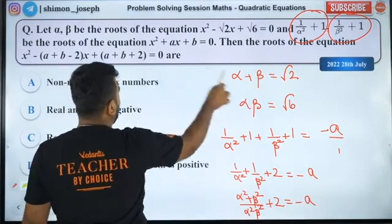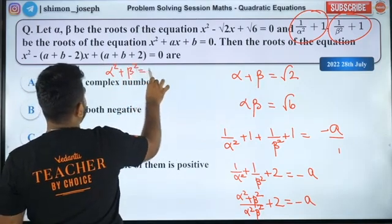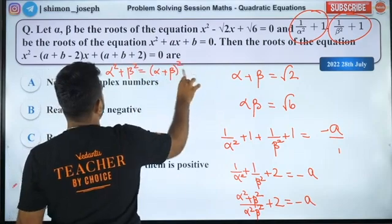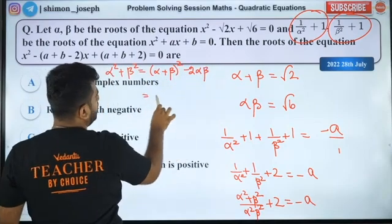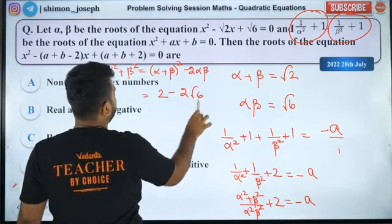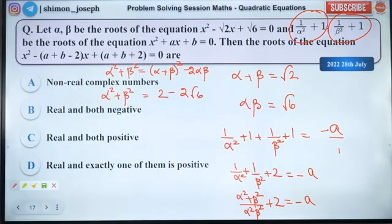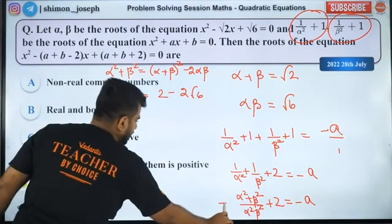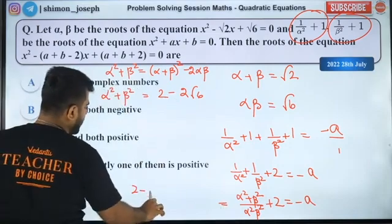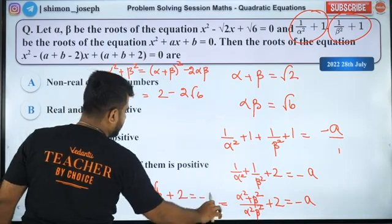α² plus β², let's do this. α² plus β² is equal to (α + β)² minus 2αβ. So it is (√2)², 2 minus 2αβ. So this is α² plus β², super. Where a level? Yup, are you all happy with this? Very good. So α² plus β² is 2 minus 2√6 by 6 plus 2, plus 2, that is minus a. Okay, is this clear?